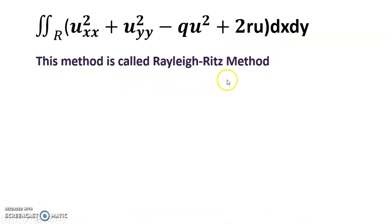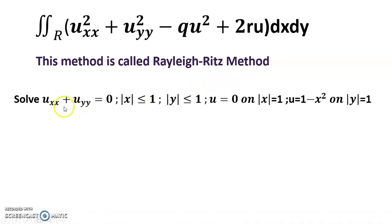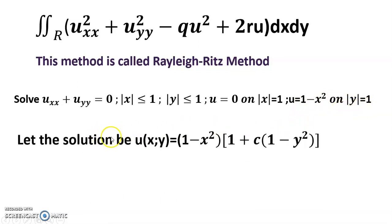Solve uxx + uyy = 0, |x| ≤ 1, |y| ≤ 1; u = 0 on |x| = 1, u = 1 - x² on |y| = 1. Let the solution be u(x,y) = (1-x²)[1 + c(1-y²)].